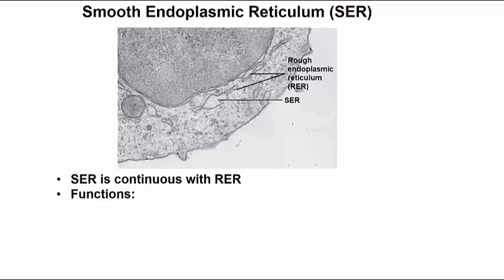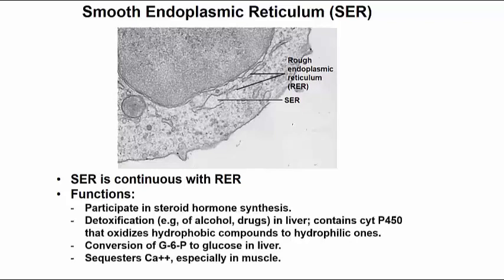The SER serves diverse and apparently unrelated functions. In the animal liver, one of the functions is to synthesize steroid hormones. Another is to oxidize hydrophobic compounds into hydrophilic ones. This is catalyzed by an enzyme of the SER called cytochrome P450. SER serves to detoxify harmful substances like alcohol and even certain drugs.